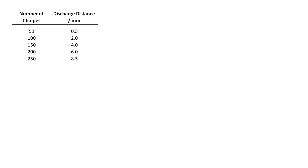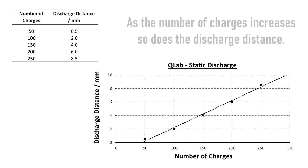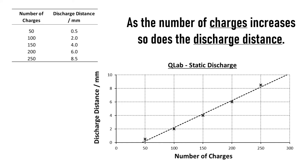So let's see what happens if we plot that as a graph. There are a couple of very simple things we can pick out. One of them is that this is a linear relationship — that means it follows a straight line — and what that tells us is that the discharging distance is proportional to the number of charges. And as the number of charges increases, so does the discharge distance.